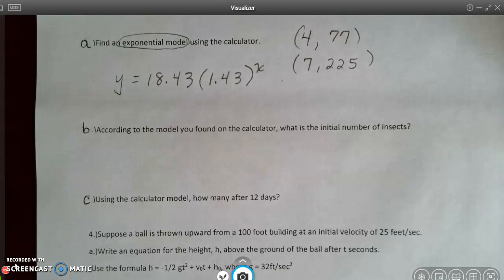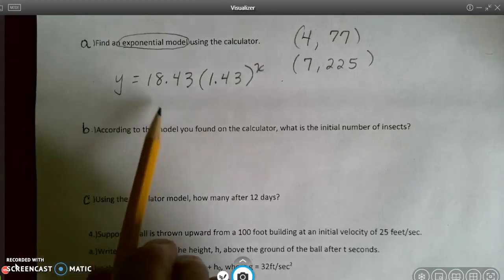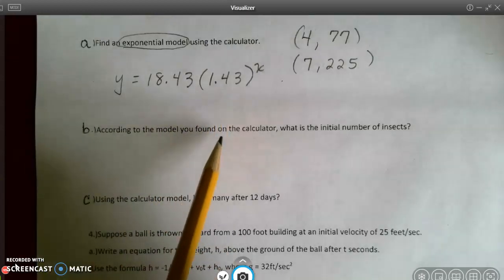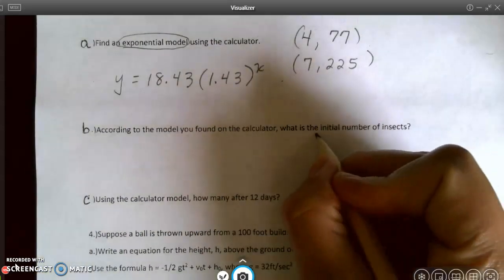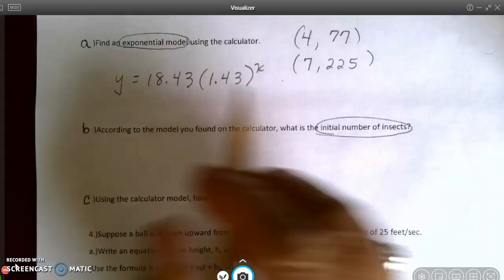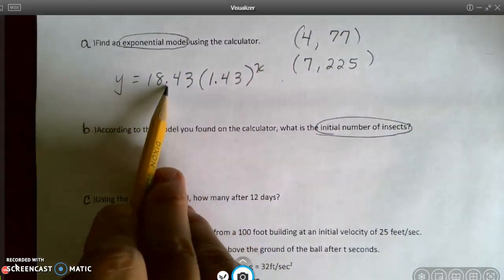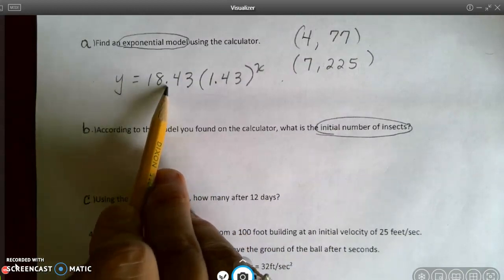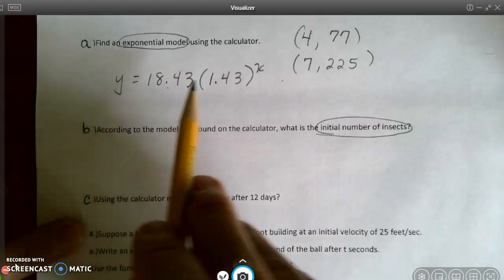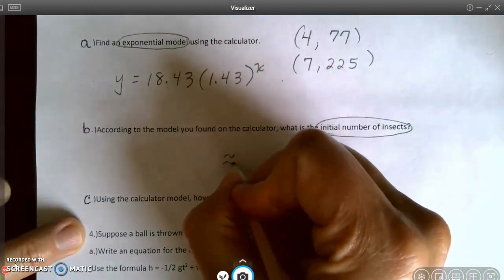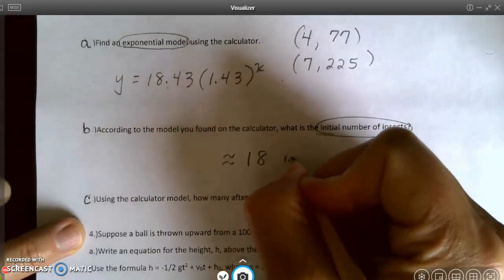All right, so I wrote down my equation that I've gotten from my calculator. And I'm going to go into part B. According to the model, so the model that I wrote right here, that you found on the calculator, what is the initial number of insects? Well, the A value is always my initial amount. And because we're talking about insects here, I want to round this. And that would be approximately 18 insects.